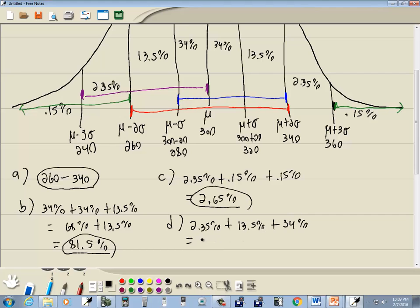And that gives us 15.85% plus 34%, which gives us 49%.